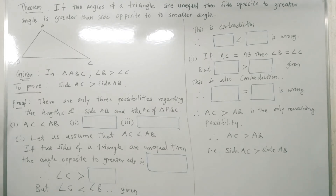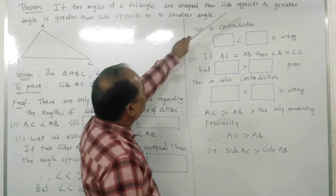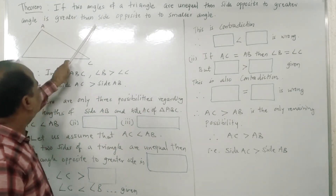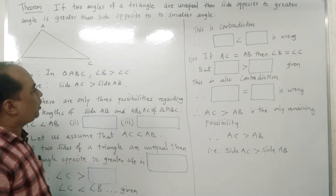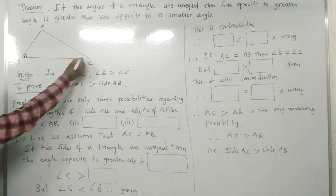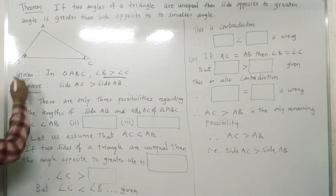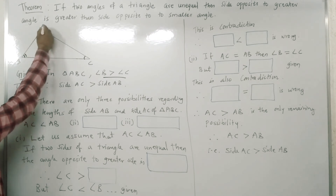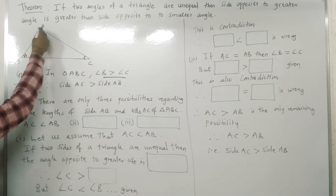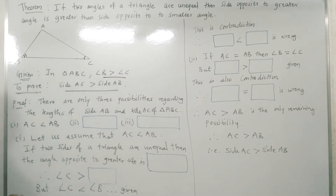Statement of the second theorem: if two angles of a triangle are unequal, then the side opposite to the greater angle is greater than the side opposite to the smaller angle. Let us consider triangle ABC where angle B is greater than angle C. We have to prove that the side opposite to the greater angle, that is AC, is greater than the side opposite to the smaller angle, side AB.